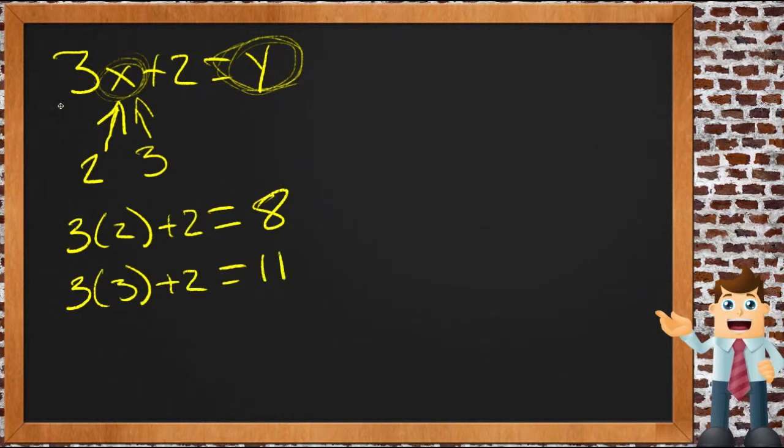So with this machine, the 3x plus 2 machine, or the 3x plus 2 recipe, the output is going to be dependent on what we put in for x.